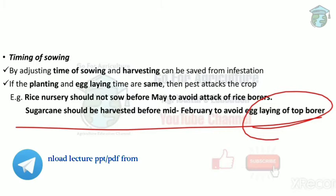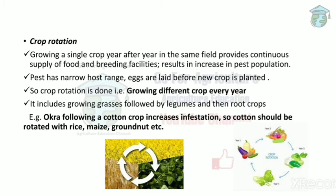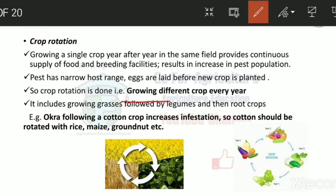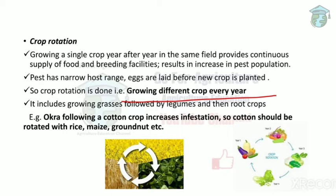Crop rotation means growing different crops every year. If you grow rice every year, you're giving the rice stem borer food and reproduction facilities every year. To control pest population, you should follow crop rotation. Crop rotation includes: first cultivate grasses, then legumes, then root crops — growing different crops every year.